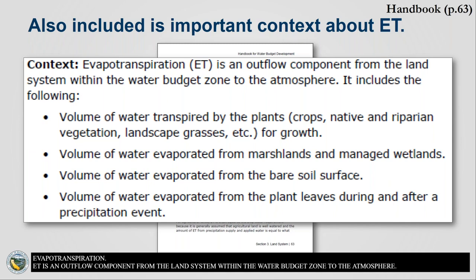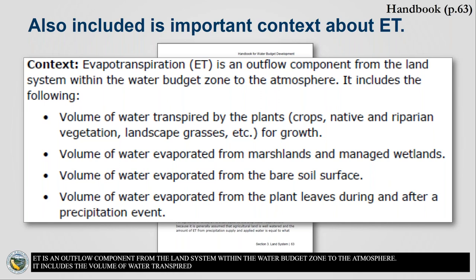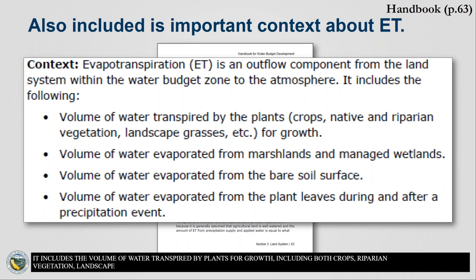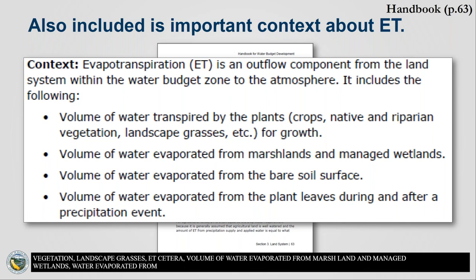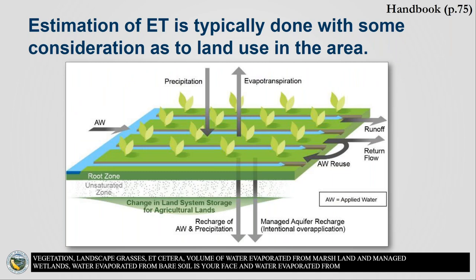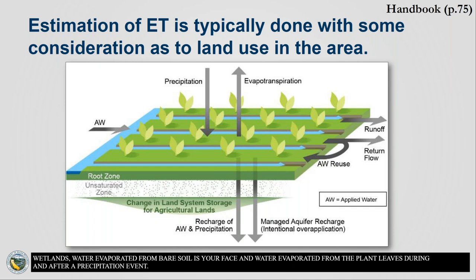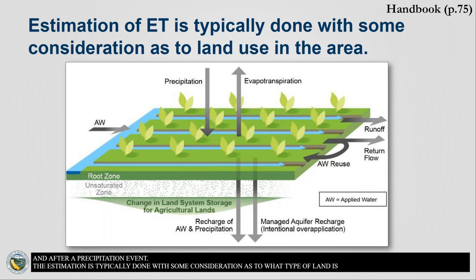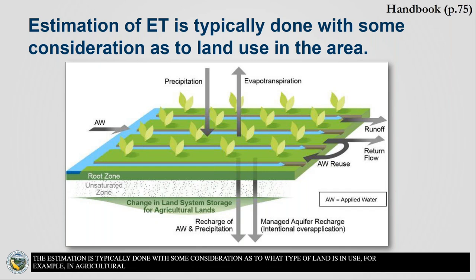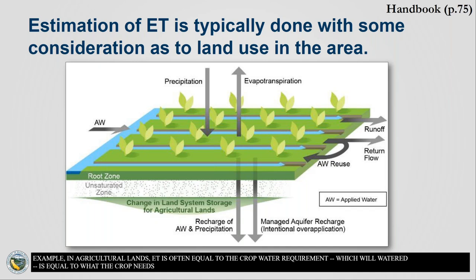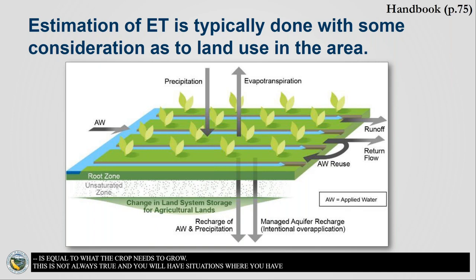ET includes the volume of water transpired by plants for growth, including both crops, native and riparian vegetation, landscape grasses, etc. It includes volume of water evaporated from marshlands and managed wetlands, volume of water evaporated from bare soil surface, and volume of water evaporated from plant leaves during and after precipitation events. An important thing to understand about ET is that estimation is typically done with consideration of what type of land is in use. In agricultural lands, ET is often equal to the crop water requirement because it is generally assumed that agricultural land is well-watered, and the amount of ET from precipitation supply and applied water equals what the crop needs to grow, though deficit irrigation does occur.